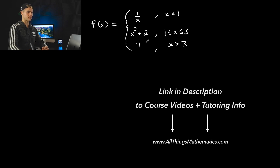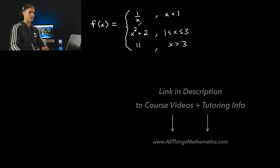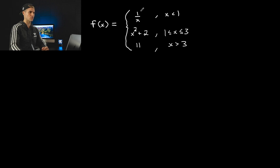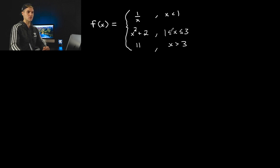In this function, notice that we have three pieces. The y values are going to be 1 over x when x is less than 1. The y values are going to be x squared plus 2 when x is greater than or equal to 1 but less than or equal to 3. And then the y values are just going to be 11 when x is greater than 3.